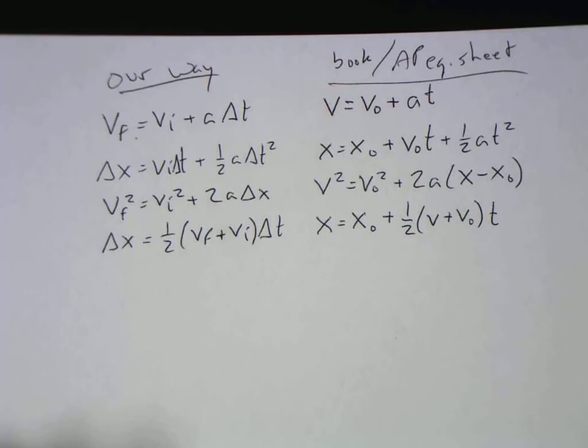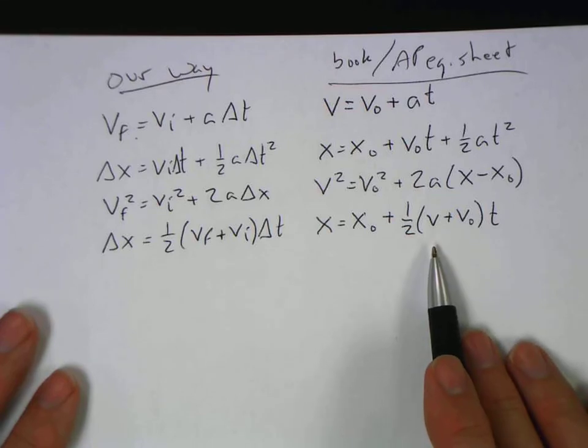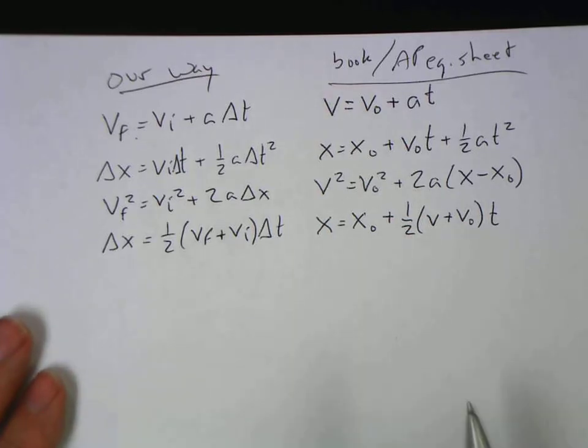So the way we've been writing it down so far, the way the book writes it down, people go and look things up and then they're totally confused on what the little zeros mean. Okay, they are the initial values back when you hit zero on your stopwatch.